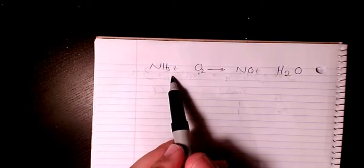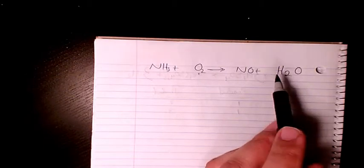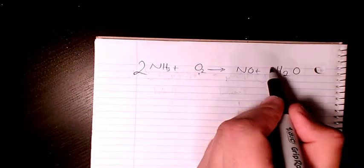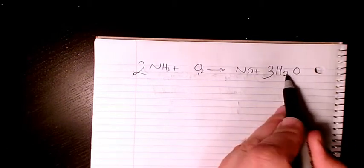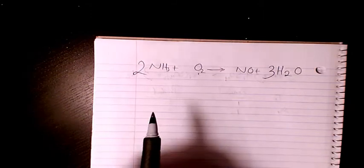We have three on this side. We have two on this side, so they are not balanced. If you want to make it balanced, we can have two on this side and three on this side. So three times two is six, two times three is six. So now hydrogen is balanced.